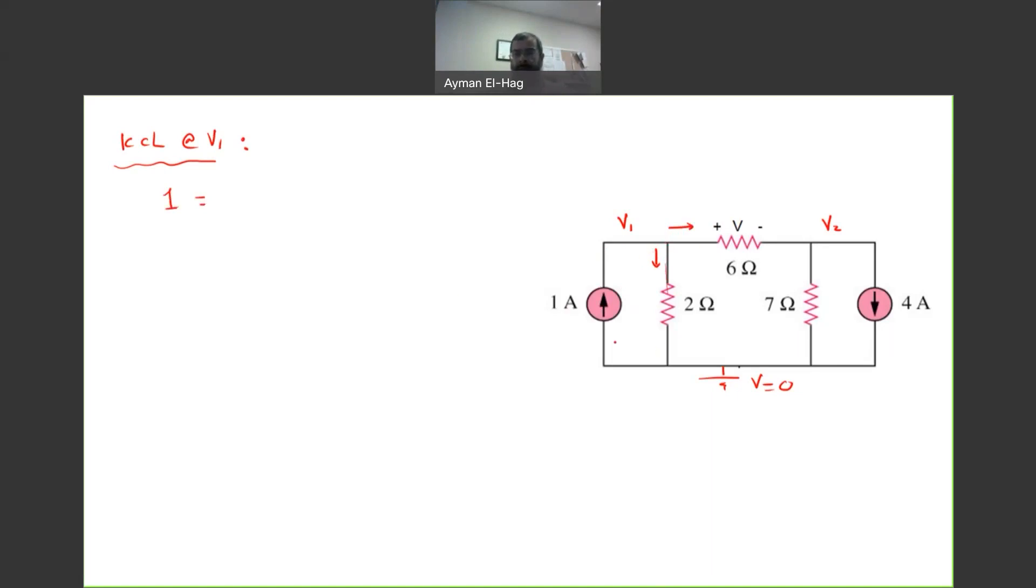So, the current that goes to the bottom, V1 minus the voltage on the other side of the resistance, which is zero, divided by two, plus the other current, which is V1 minus V2, divided by the resistance in between, which is six. And that's it.